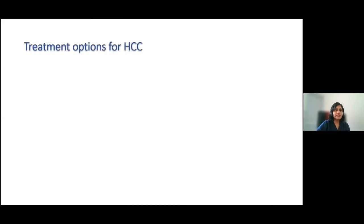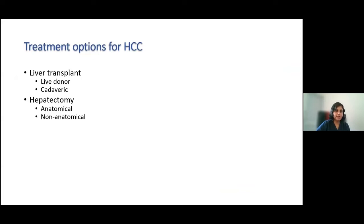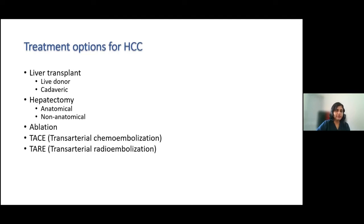The treatment options available for hepatocellular carcinoma include: first, liver transplant — the most curative option available, which can be through a live donor or a cadaveric donor; then hepatectomy, resection of the lesion, which can be either anatomical or non-anatomical; then ablation; TACE, trans-arterial chemoembolization, which are more palliative than curative; then TARE, trans-arterial radioembolization; and systemic therapy, again palliative, including multikinase inhibitors and immune checkpoint inhibitors.